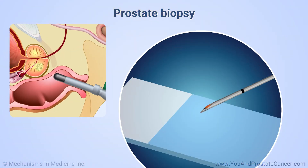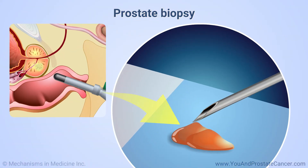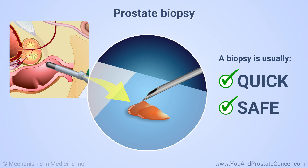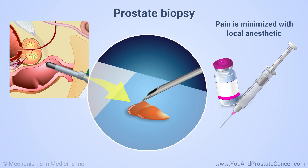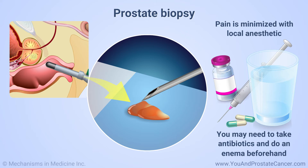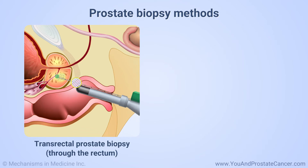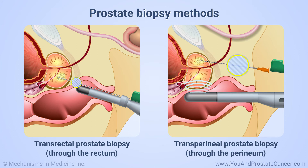The samples are then sent to a lab to check for cancer cells. A biopsy is usually quick and safe. The pain is minimized with local anesthetic. You may be asked to take antibiotics and do an enema before the procedure. Prostate biopsies can be done using ultrasound guidance through your rectum or perineum, which is the space between the scrotum and anus. This perineal method may be safer and more accurate.